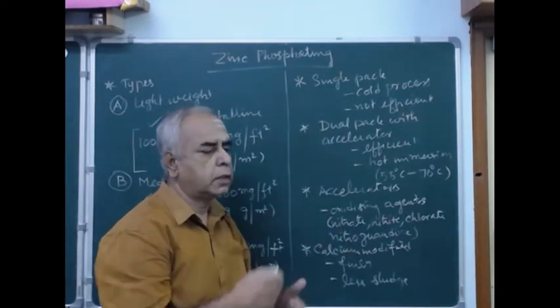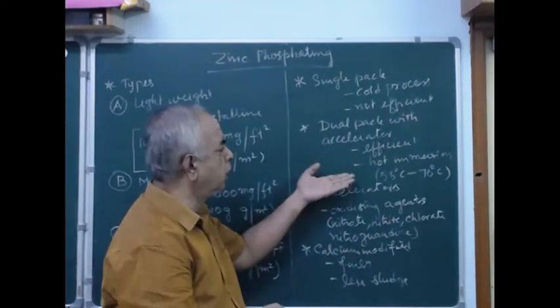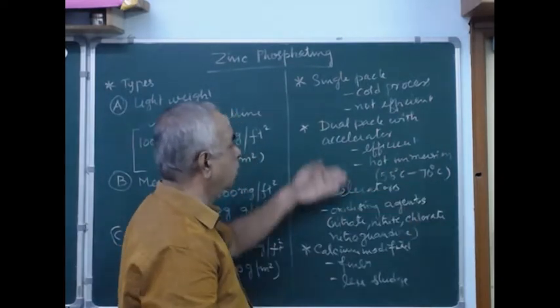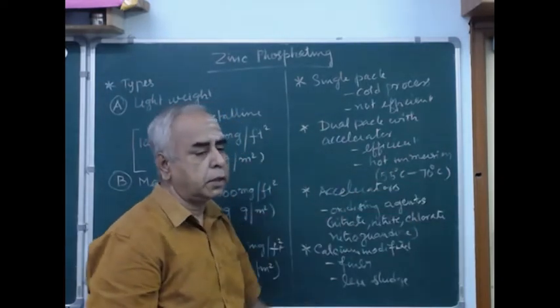The better crystallization pattern can be achieved only by 55 to 70 degrees centigrade by using appropriate accelerators.